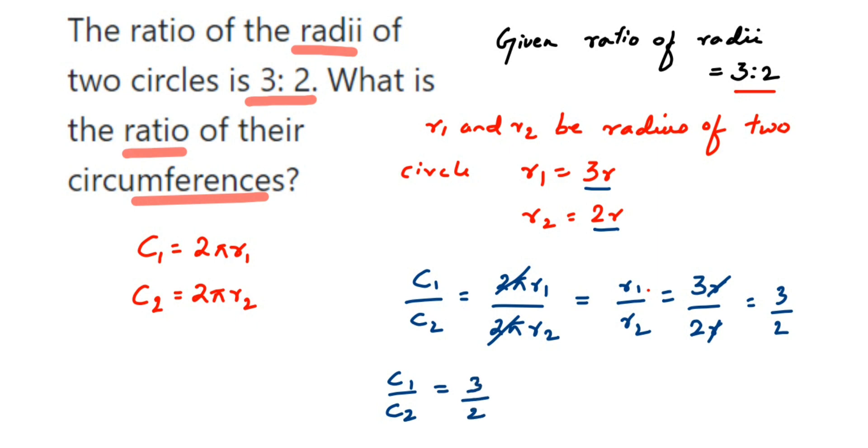Which is also nothing but c1 is to c2, the ratio is equal to 3 is to 2. So the ratio of the two circumferences is 3 is to 2, same as the ratio of the radii. I hope this question is clear.